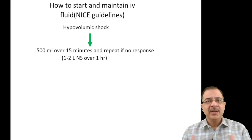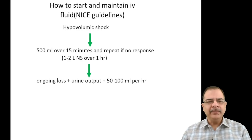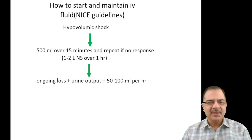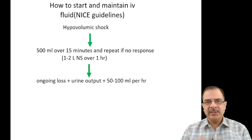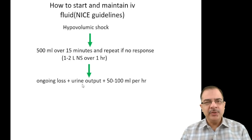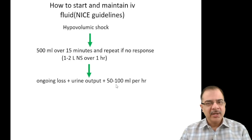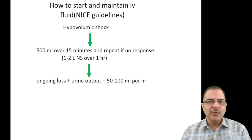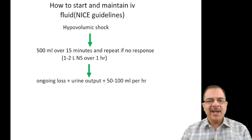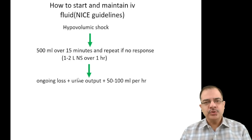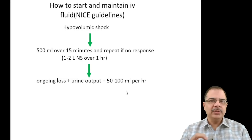For example, if the patient has diarrhea, shift to Ringer lactate subsequently. Monitor ongoing losses: if a patient is losing 300–500 ml per hour through diarrhea, add that to urine output plus an extra 50–100 ml per hour of IV fluid. The per-hour IV fluid rate depends on the type and volume of ongoing loss — whether through vomiting, diarrhea, or sweating — plus urine output.